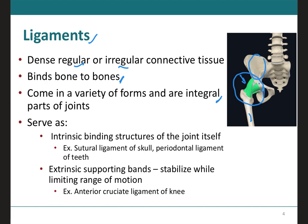Ligaments can serve as either an intrinsic binding structure within the joint itself, such as the sutural ligaments of the skull or the periodontal ligaments of the teeth. Or they can be extrinsic supporting bands that stabilize joints while also limiting their range of motion, such as the anterior cruciate ligament of the knee, which we will cover later on. As you study the various joints of the body in the sections that follow, you will learn about the structures, location, and function of a variety of those ligaments.